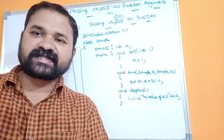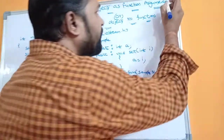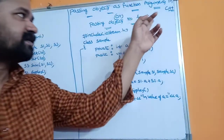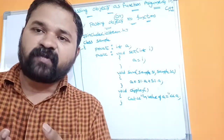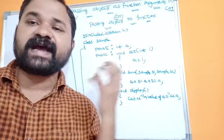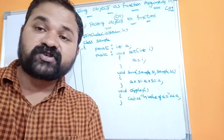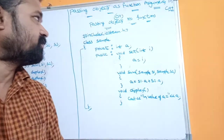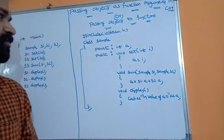In this video we are going to discuss passing objects as function arguments in C++, also called passing objects to functions in C++. Instead of passing a value or an address, we can also pass an object as the function argument. Let's see an example to demonstrate how we can pass an object as the function argument.